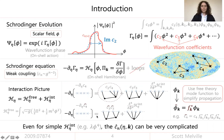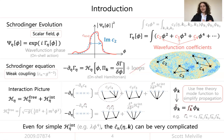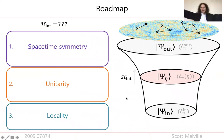Even for very simple interactions like lambda phi to the four, these wave function coefficients can be very complicated. In general they're not analytic functions of the momenta or of the conformal time — they have poles and branch cuts — so any constraints we can come up with on the functional form would be very useful. The plan for the rest of my time is: first spacetime symmetry, then unitarity, then locality, and what that means for the state as it evolves during inflation.